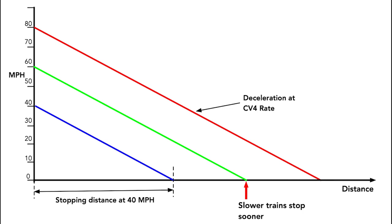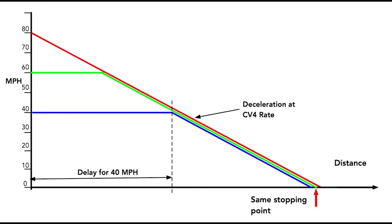We're plotting stopping distance against entry speed. The deceleration rate is always set by CV4 regardless of the speed of the train. Slower trains stop sooner. We can correct for this by delaying the start of asymmetric DCC for the slower trains.